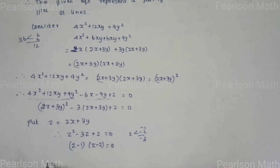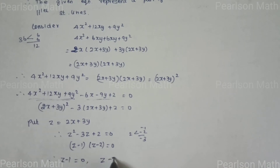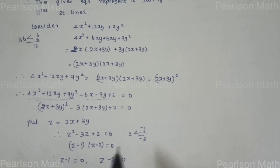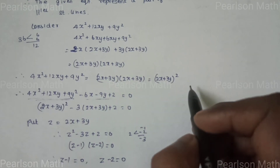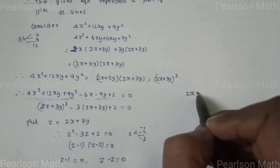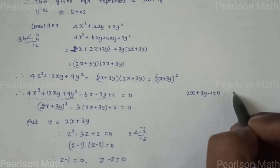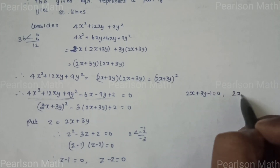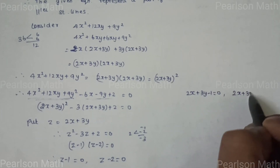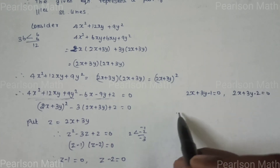Therefore z - 1 = 0 and z - 2 = 0. Substituting back z = 2x + 3y, we get 2x + 3y - 1 = 0 and 2x + 3y - 2 = 0.